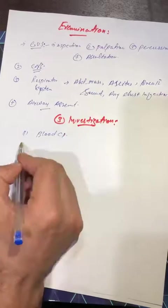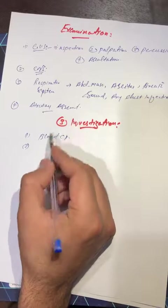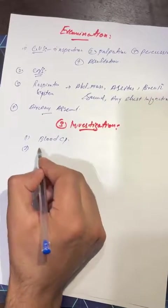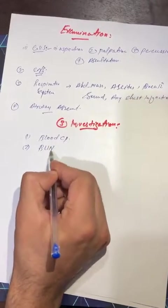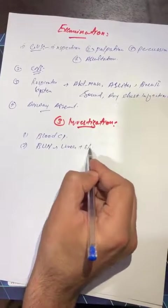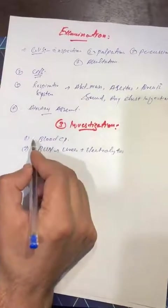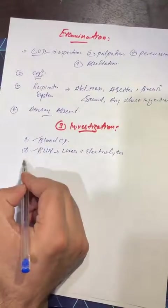Blood CP, second, for any type of renal dysfunction, we will do BUN—blood urea nitrogen level. We will check urea plus electrolytes imbalance. Before any type of surgery, we will have to do blood CP and BUN test.